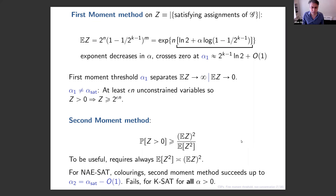What goes wrong with the second moment method is that when we get close to the satisfiability threshold, the expected number of solutions is much bigger than the typical number. There's a transition point where that happens, and then the second moment method fails.